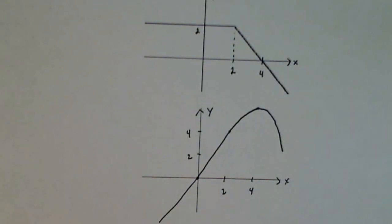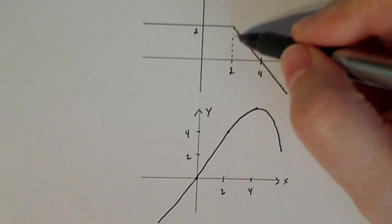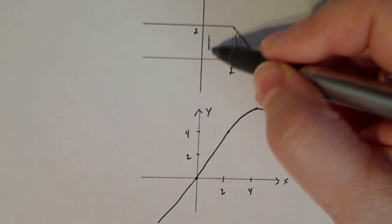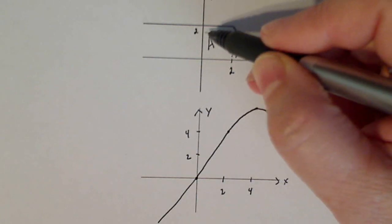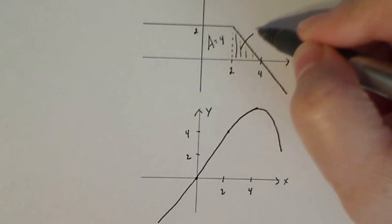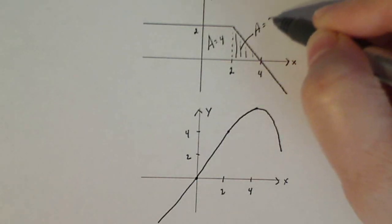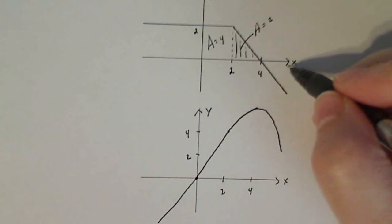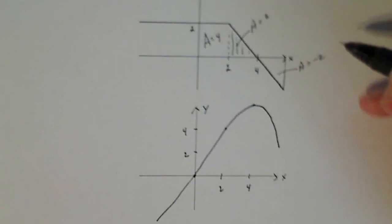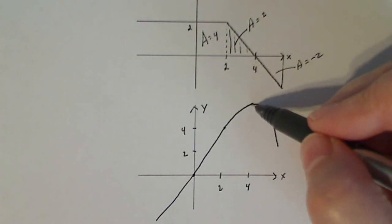Now we actually can calculate exact values based on this area right here. I know this area here, if I calculated the area, that's going to be two times two, which is four. And that area right there is going to be half of that because it's a triangle. This area here is going to be the same size as this, but negative.